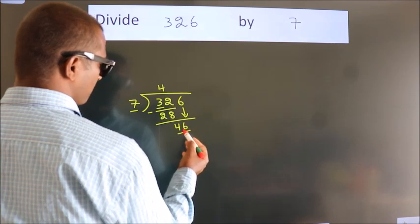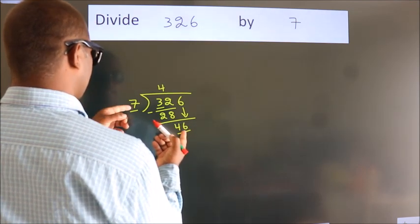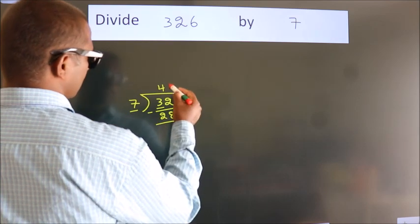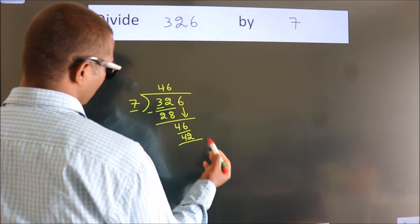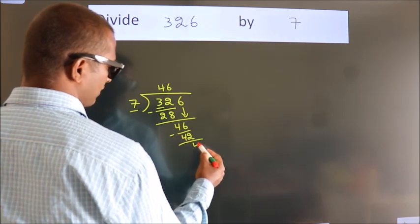A number close to 46 in the 7 table is 7 times 6, 42. Now we subtract. We get 4.